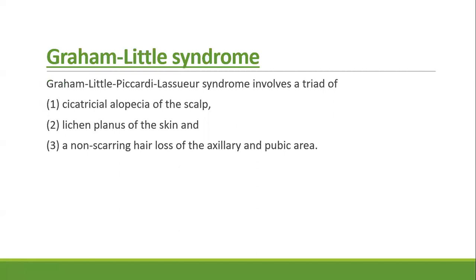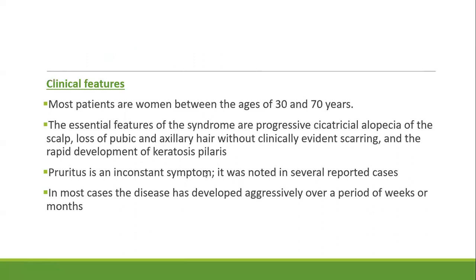The third type of follicular lichen planus is Graham-Little syndrome — fully termed Graham-Little–Piccardi–Lajor syndrome. It involves a triad of cicatricial alopecia of the scalp, lichen planus of the skin, and non-scarring hair loss of the axilla and pubic areas. If these three features are fulfilled, the diagnosis of Graham-Little syndrome can be made.